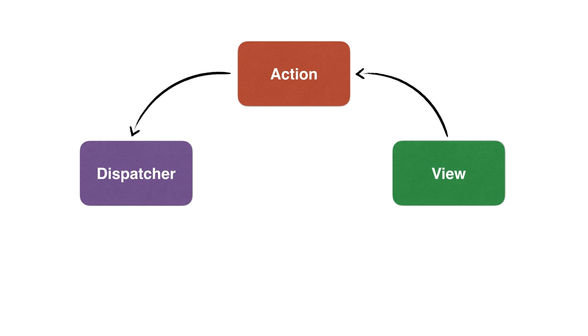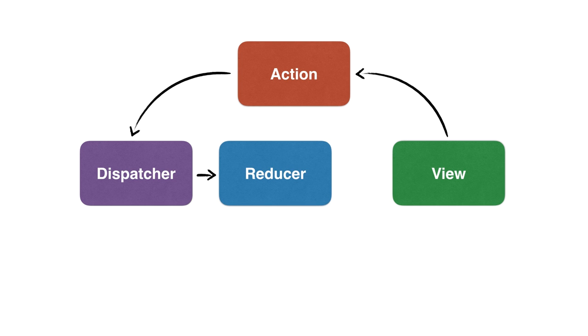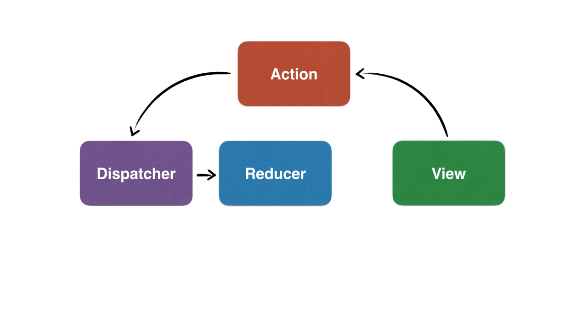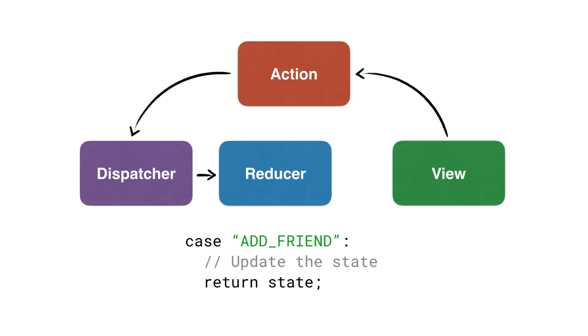That action gets handed off to this thing called a dispatcher. The dispatcher takes that action object and hands it to what are called reducers. A reducer is a function that looks at the current action coming in, and then based on that action type and payload, it generates some new state for our application. The interesting thing about Redux is that it keeps all the state for your app in one big top-level object. So any change dispatched by any component is going to update that one big state object. Inside our reducer, we look at the incoming action — action type 'add friend' — run some code, maybe push something into an array, and then return that state.